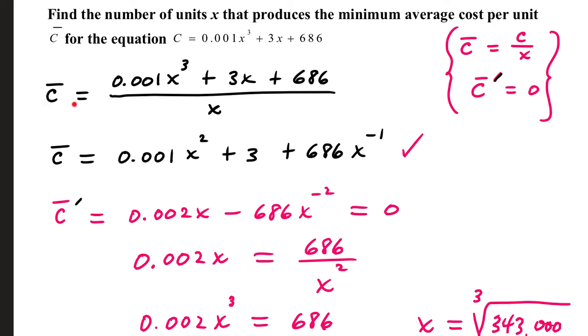We're also going to be looking to minimize, so we're going to take the derivative of the average cost and set it equal to 0. Let's go back to our total cost function. For average cost C bar, we take our total cost function, that's our numerator, divide by x.